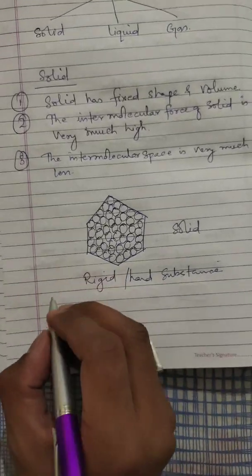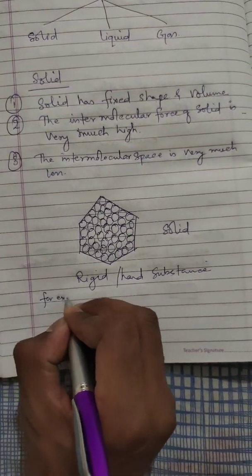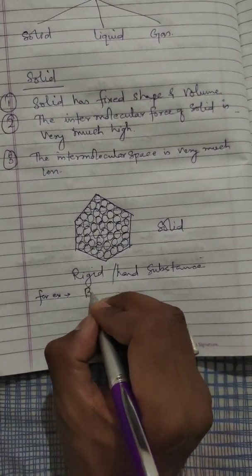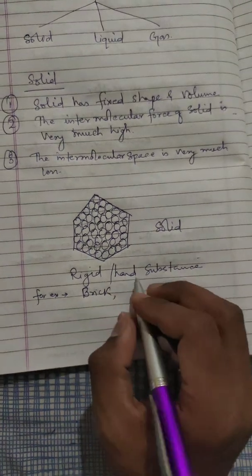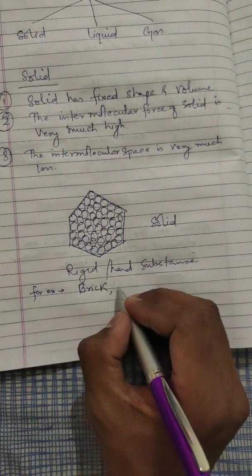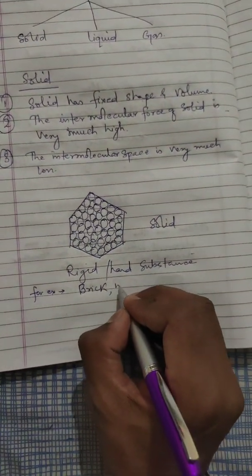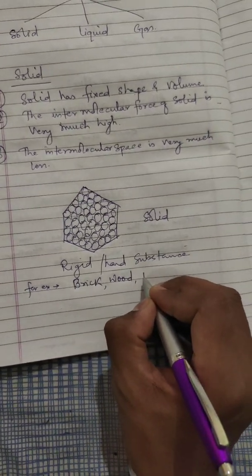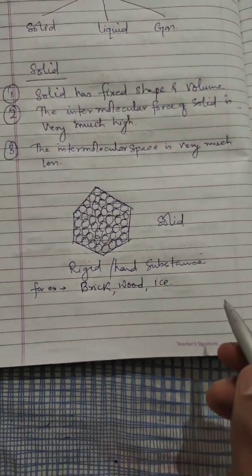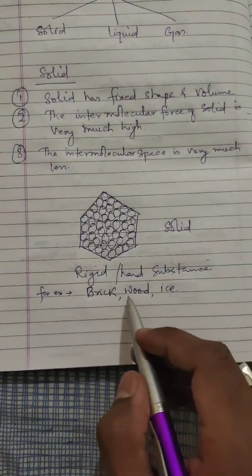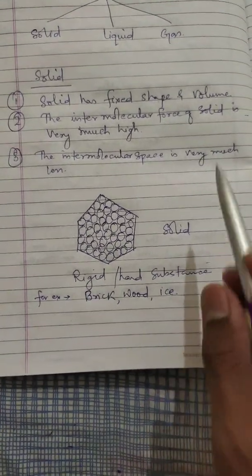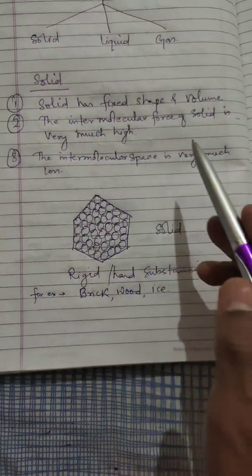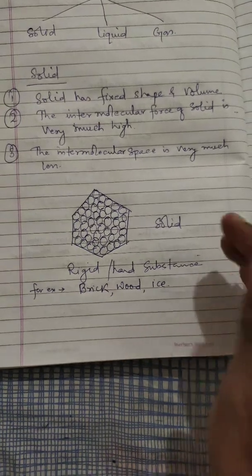There are certain examples of solid. For example, brick is an example of solid, wood is an example of solid, and ice is an example of solid. These are the few examples of solid, which have very high intermolecular force and very little intermolecular space.